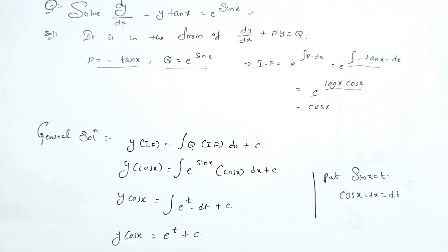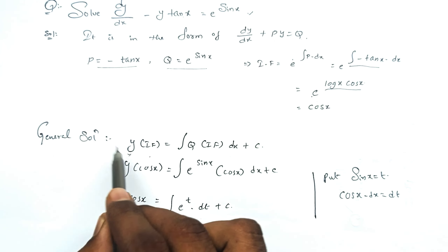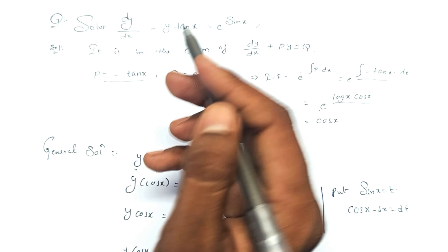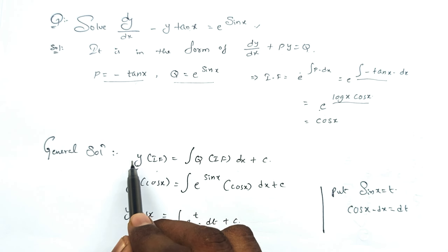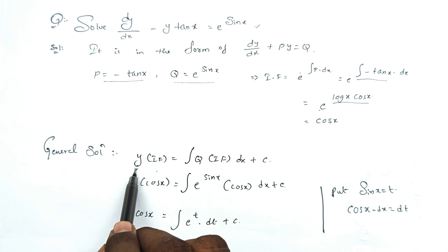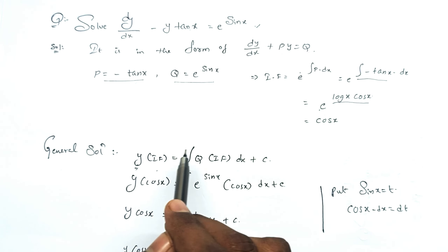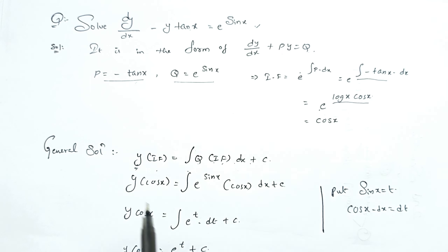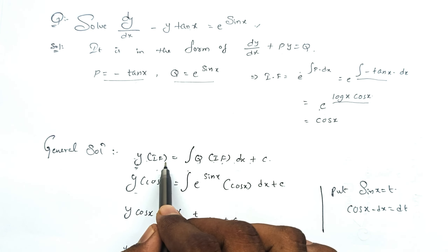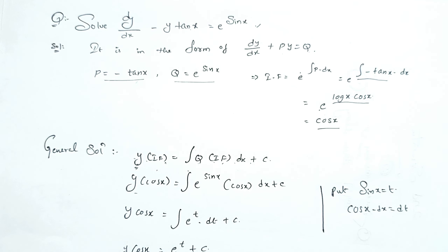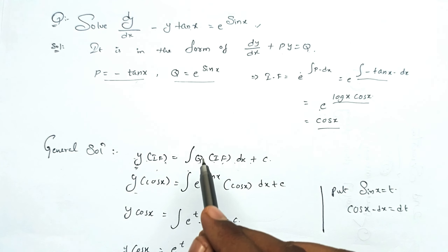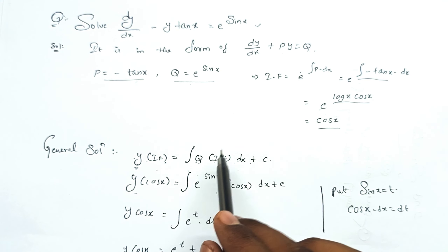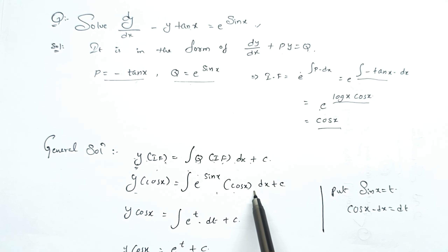The general solution formula is: y multiplied by the integrating factor equals the integral of Q times the integrating factor dx plus C. So y·cos x equals the integral of e^(sin x)·cos x dx plus C.